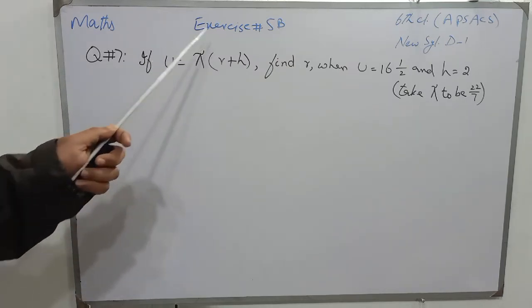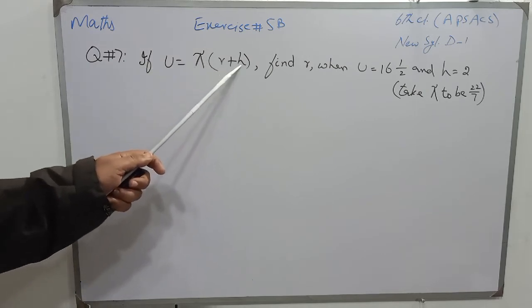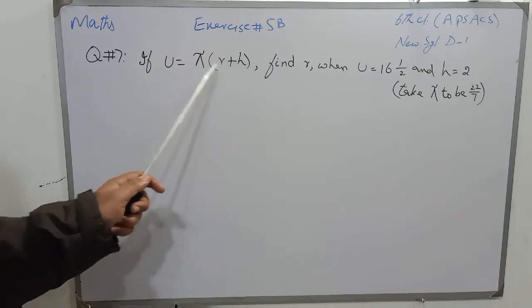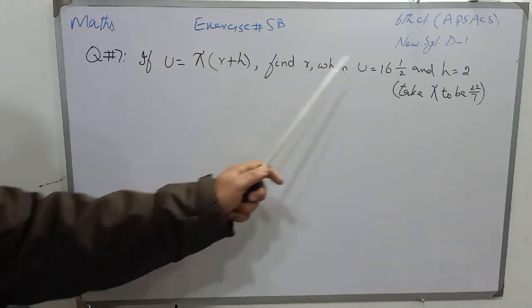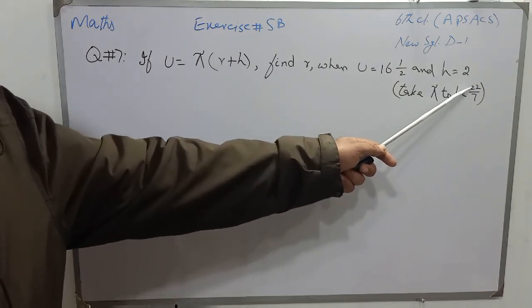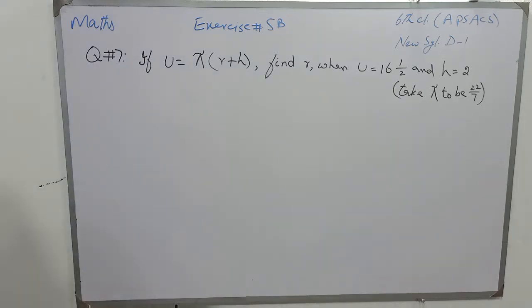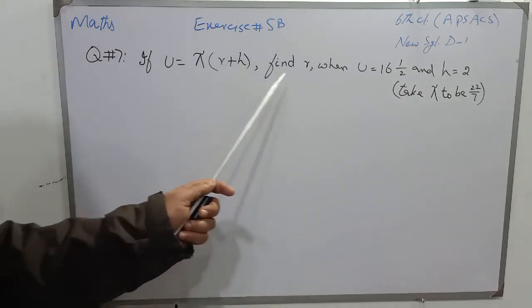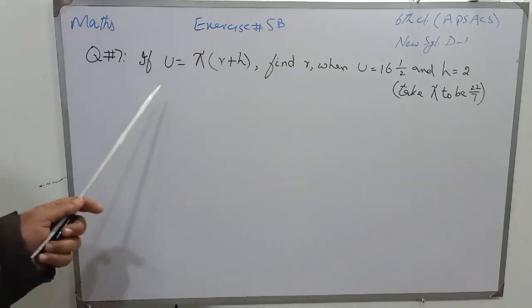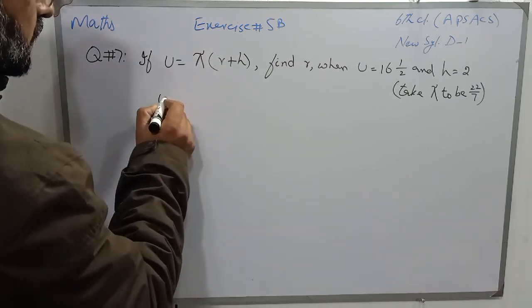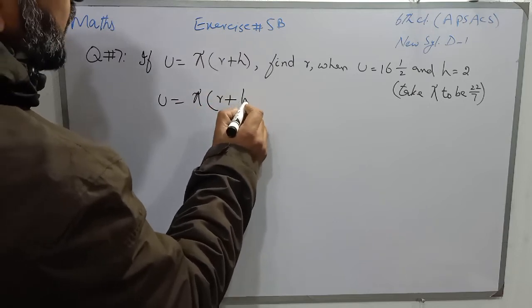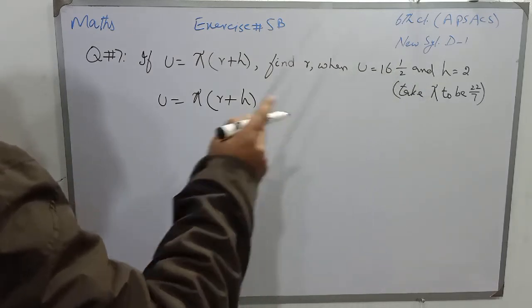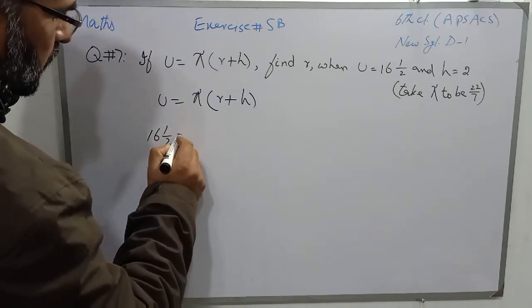Question number 7 of the same exercise is: if u is equal to pi into r plus h, find r when u is 16 and one half, h is 2, and the value of pi is 22 over 7. It is understood that pi is 22 over 7, or in decimal 3.142, but in this question we will use 22 over 7. So first I will write the formula: u is equal to pi into r plus h.